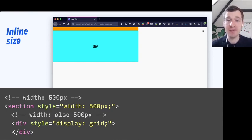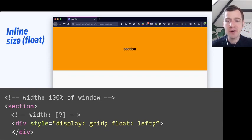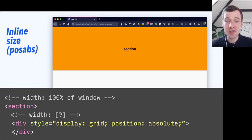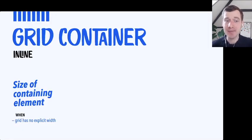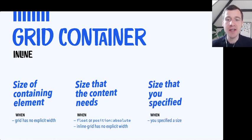So the grid is going to be as big as its containing element. Now, what we could do is set a float to that div element — but if we do that, we will find that its size is completely gone. The same happens when we set position: absolute. What's going on is that when you use either floats or position: absolute, this element is only going to take the space it needs for the content inside of it. If we put something in there like 'hello world,' it's going to take exactly the size needed for those two words. The grid container takes the size of its containing element when no explicit width is set, or the size the content needs when you use float, position: absolute, or inline grid.